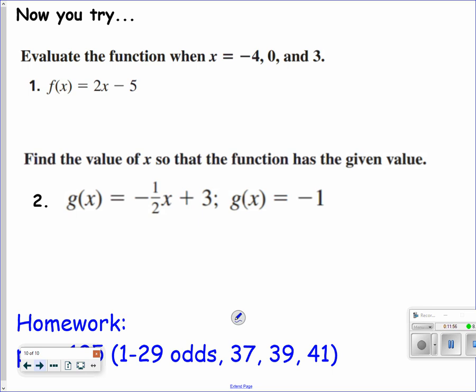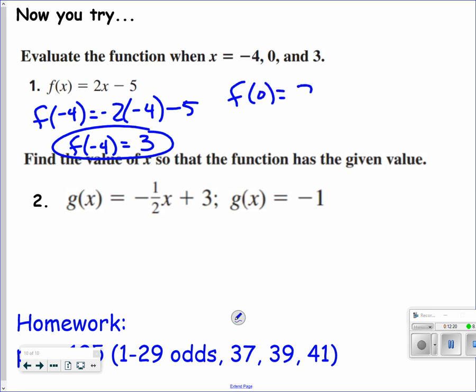Alright, welcome back. Now, x is equal to negative 4, x is equal to zero, and x is equal to 3. I want to know if I plug negative 4 in for x, what value do I get? When I plug negative 4 into the f function, negative 2 times negative 4 is 8, and 8 minus 5 is 3. f of 0: 2 times 0 minus 5, f of 0 is negative 5. And the last one, what happens if I plug 3 in? f of 3: 2 times 3 minus 5, so f of 3, when I plug 3 into the x's for the f function, I get 1.